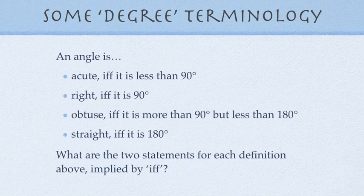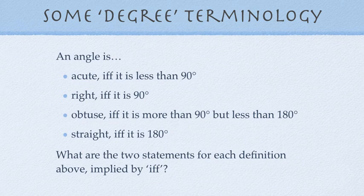Here's some other degree terminology. An angle is acute if and only if it is less than 90 degrees. An angle is right if it is exactly 90 degrees. An angle is obtuse if it is between 90 and 180. It can't be 90 and it can't be 180, so it's got to be more than 90 and less than 180. And an angle is straight if and only if it is 180 degrees. And notice that if and only if implies two conditional statements. So, for example, in that first one, we can name the conditional statements. If an angle is acute, then it is less than 90 degrees. And if an angle is less than 90 degrees, then it is acute. So each one of those IFFs, or if and only if, implies two conditional statements.